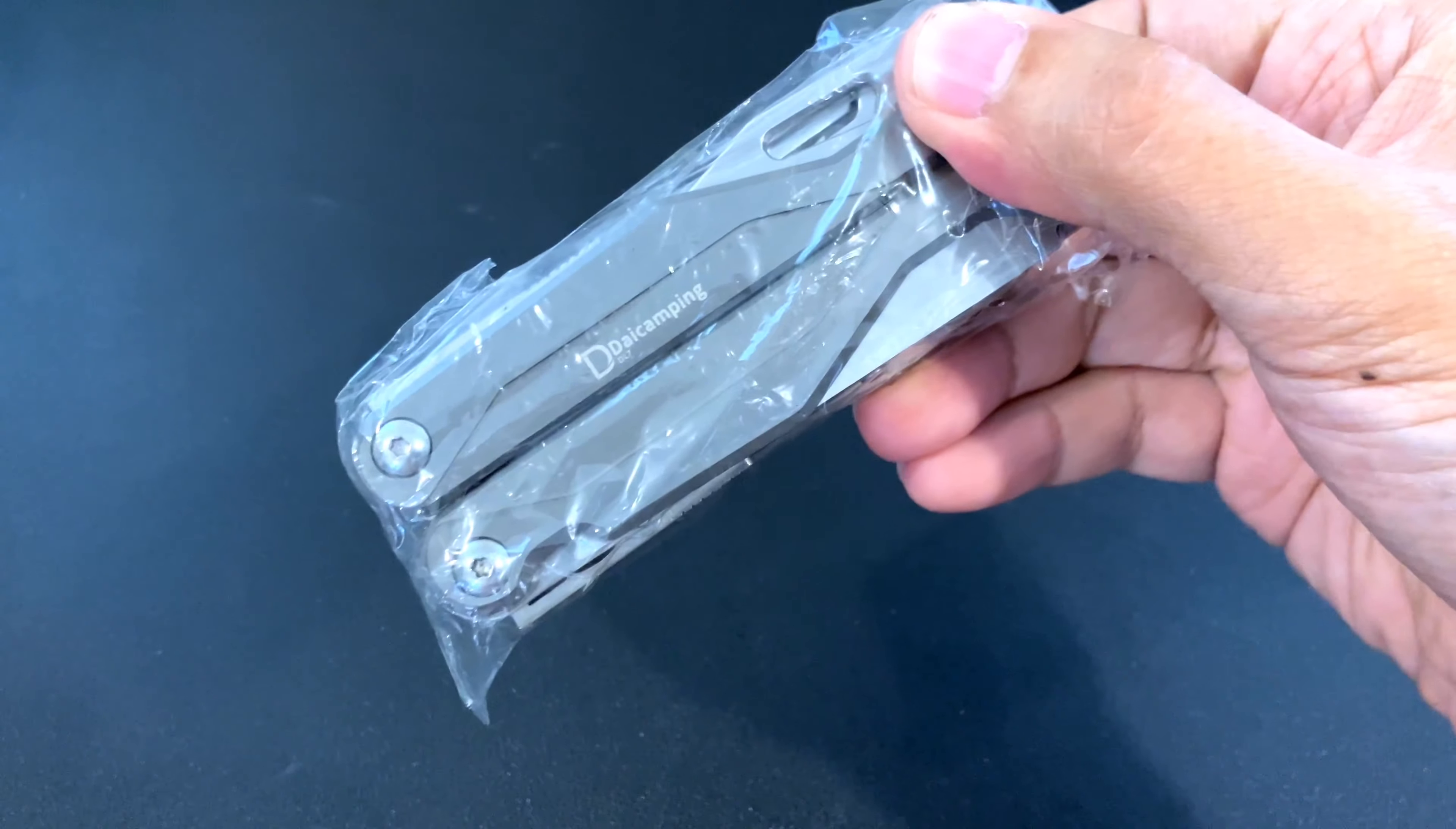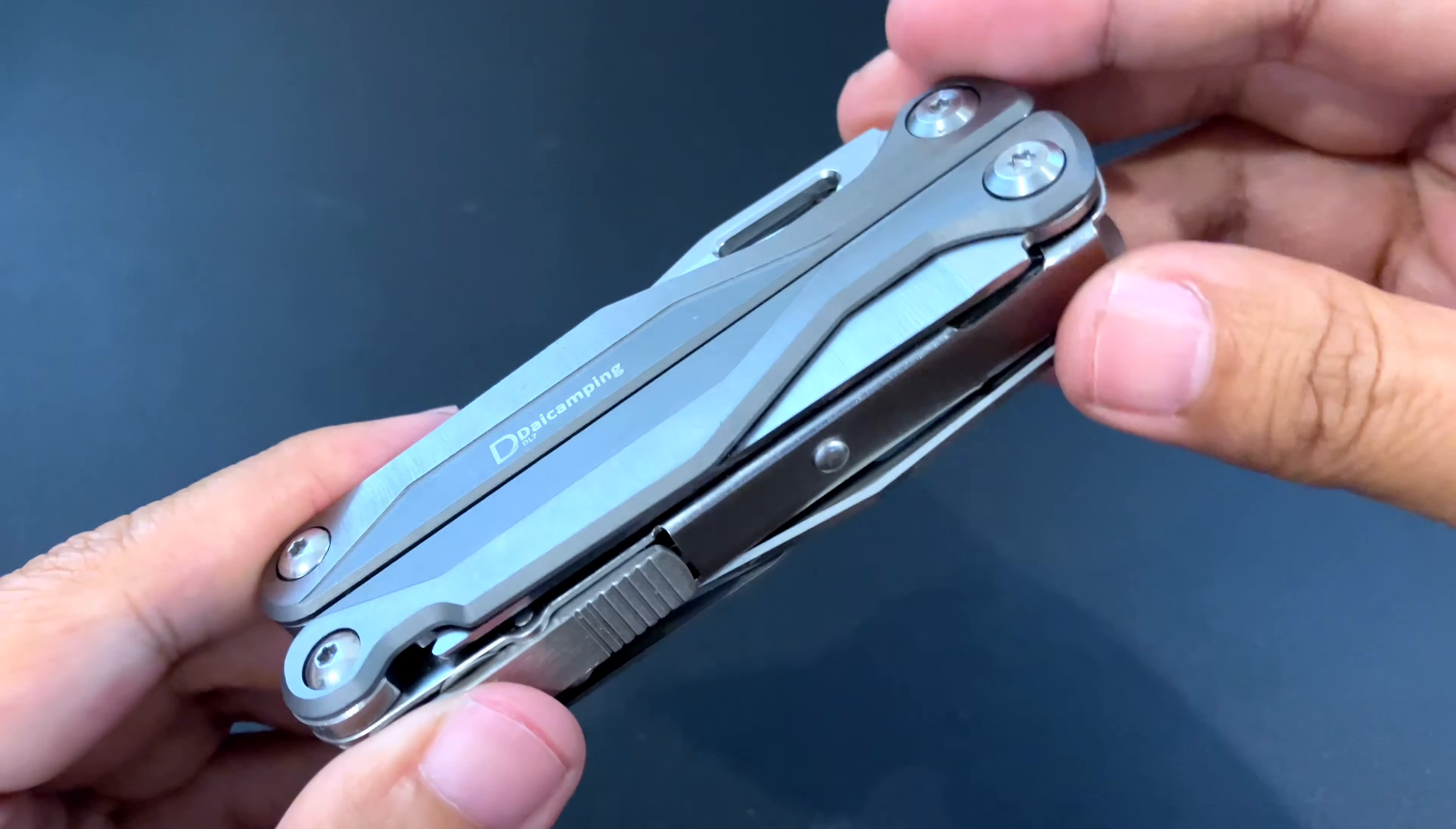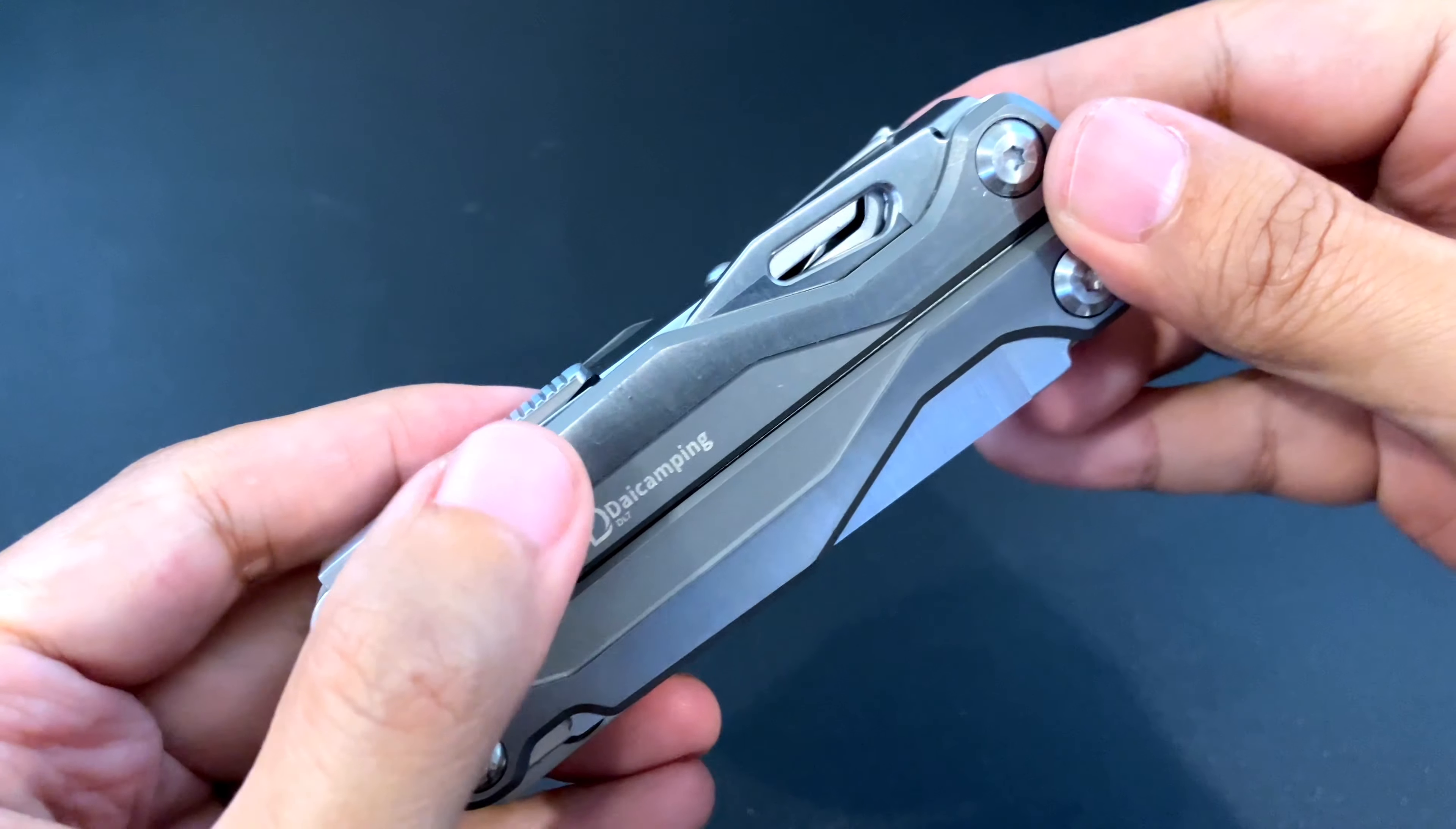So here's the tool itself. It has these titanium scales like the Leatherman Charge TTI which is the main selling point of this tool. And it does seem to be titanium. It's got that grayish color and relatively warm feel.